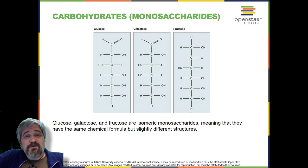Plants synthesize glucose using carbon dioxide and water by the process of photosynthesis, and the glucose, in turn, is used for the energy requirements of the plant. The excess synthesized glucose is often stored as starch that is broken down by other organisms that feed on plants.